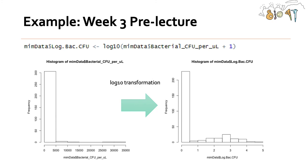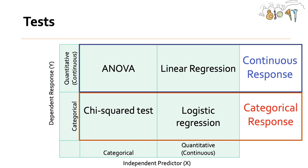We saw an example of this in our week three pre-lecture, where we started out with bacterial CFU per microliter data. After taking the log10, we get much more normally distributed data. However, we do have a lot of zeros, which is something to consider about this data set and could be the reason why, if you think back to that pre-lecture, we actually failed the Bartlett test. So to summarize: we've talked about linear regression and ANOVA — two tests with continuous dependent responses — and in the next few videos I'll be talking about the chi-square test and logistic regression.